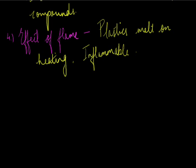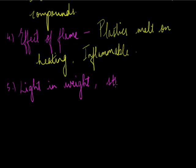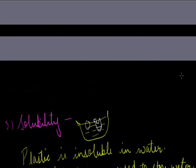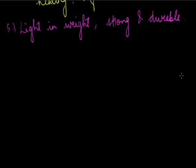The next important property is that plastics are very light in weight. They are also strong and durable — even when some plastics are thrown from a great height, they don't break. You can also get any desired shape and size. So these are the important properties of plastic which are common to all plastics.